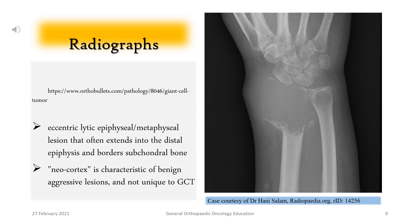The lesion is an eccentric lytic epiphyseal/metaphyseal lesion that often extends into the distal epiphysis and borders subchondral bone. A neocortex is characteristic of benign aggressive lesions and is not unique to GCT.